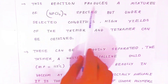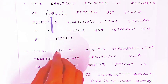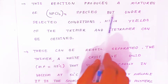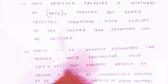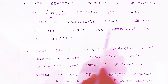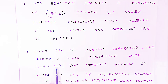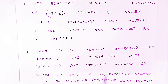This reaction produces a mixture of n number of NPCl2 species. But under selected conditions, high yields of trimers and tetramers can be obtained. These can be readily separated. The trimer is a white crystalline solid with a melting point of 113 degrees Celsius, sublimes readily in vacuum at 50 degrees Celsius, and is commercially available. It is the source for synthesis of linear polymers.